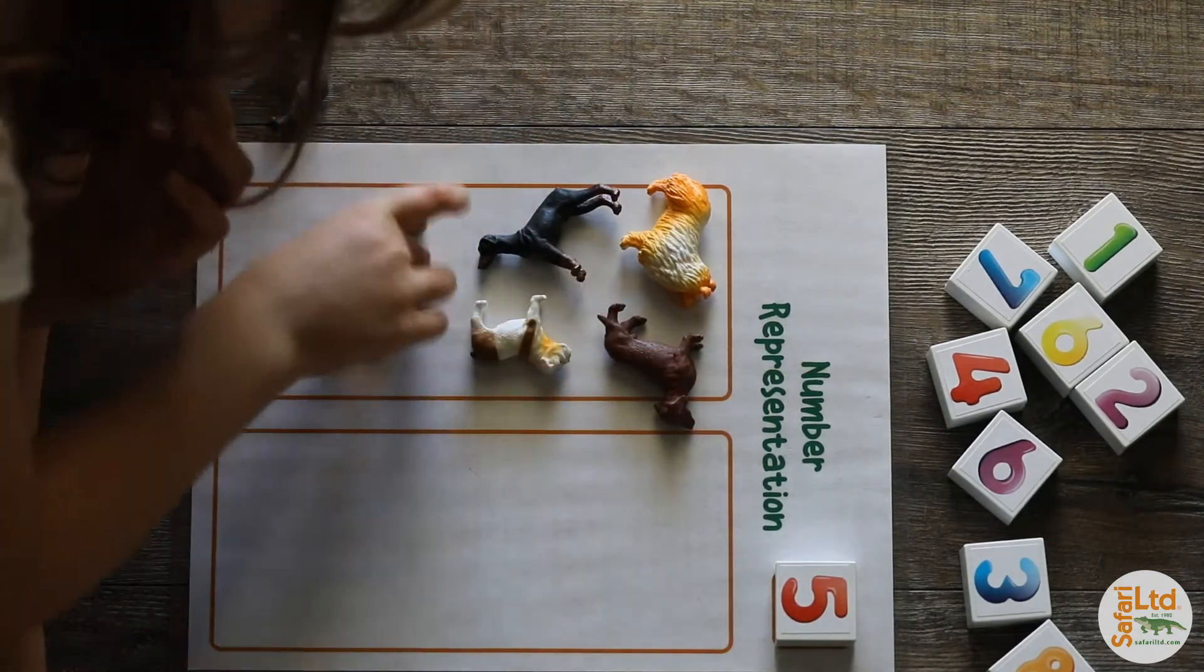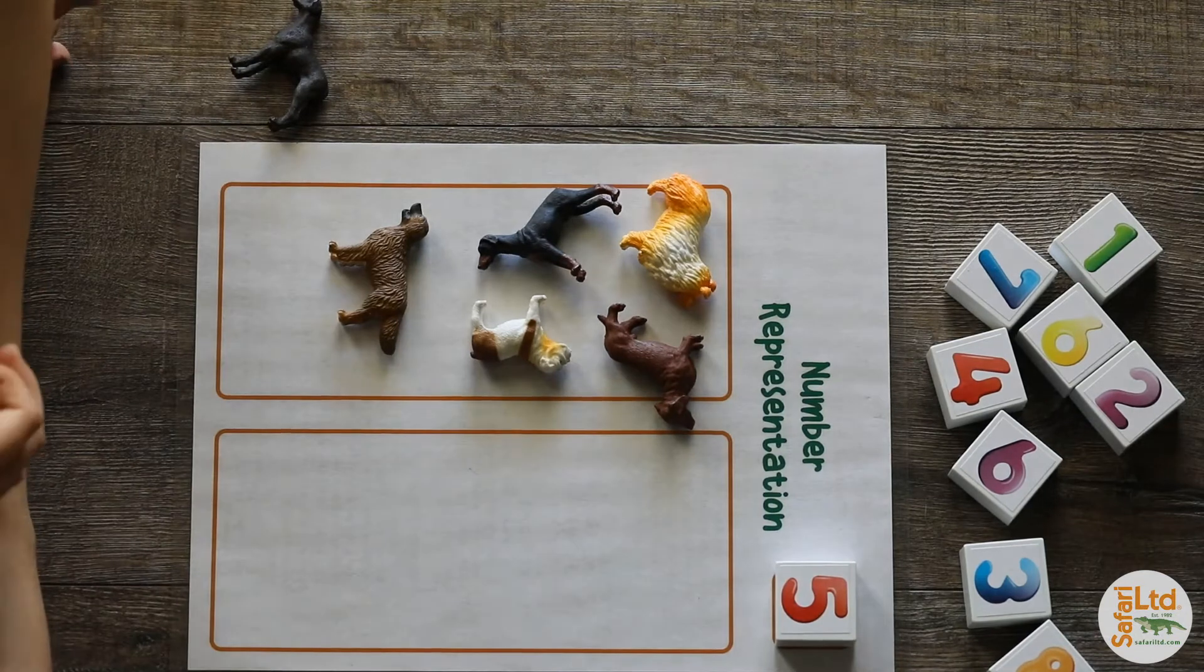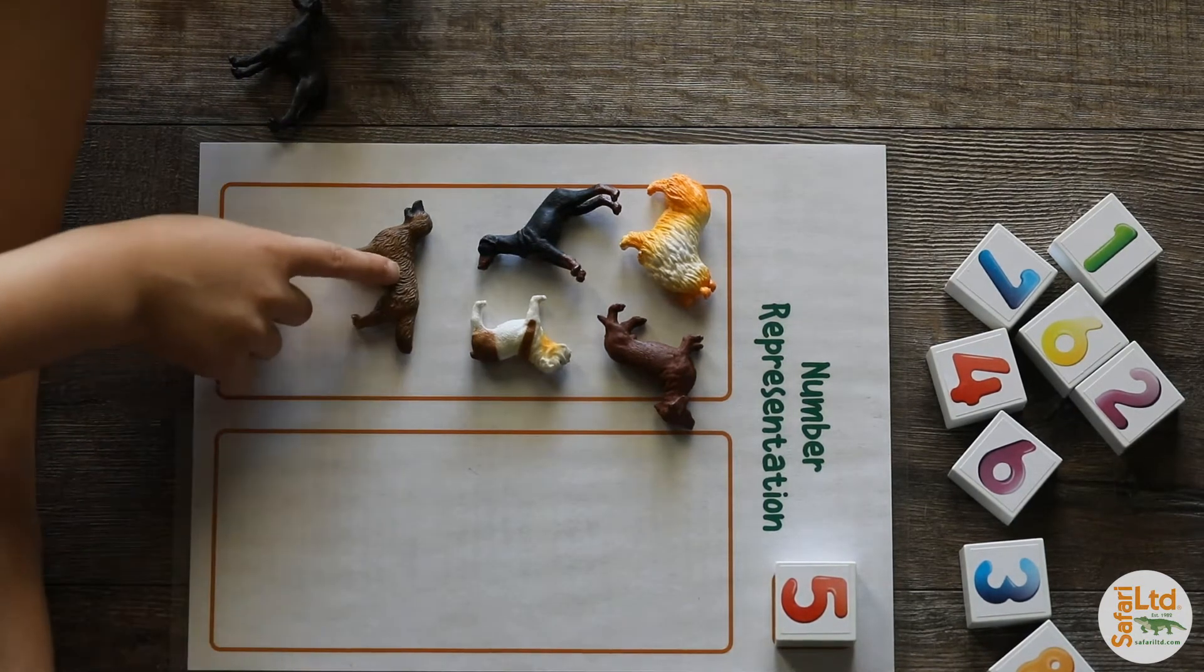You can switch the order of the activity by placing the amount of dogs in the box first and then matching the correct numbered block.